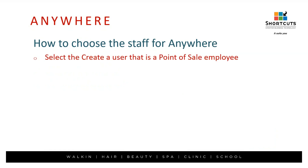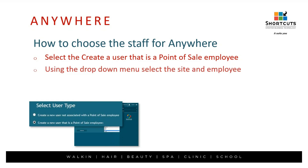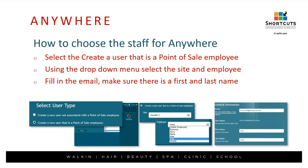So how do you select staff once you go to your Anywhere options? You're going to go to Create a User. Always use the second option — a user that is a point-of-sale employee. This is how Shortcuts is able to recognize who the staff member is and what their appointments look like, because they're associated with somebody. You're going to use the drop-down menu to select a particular site if you're a multiple-site location.